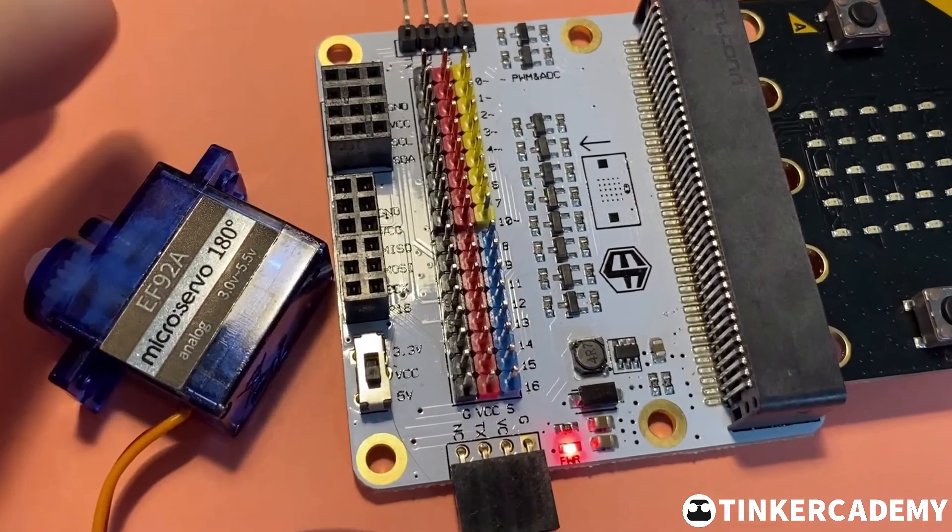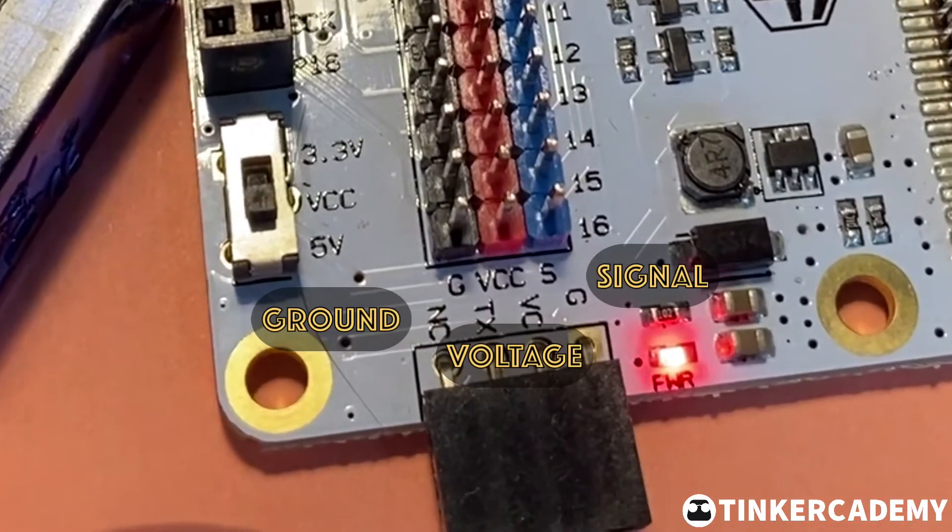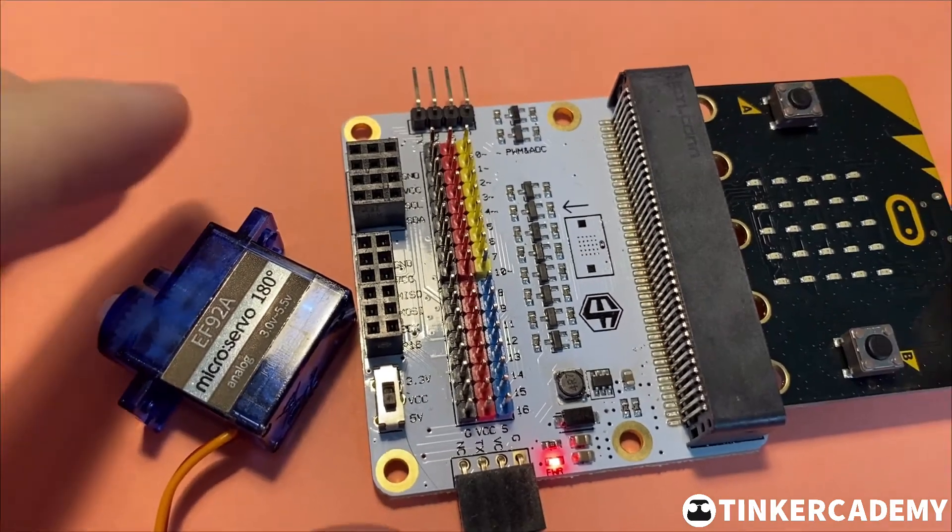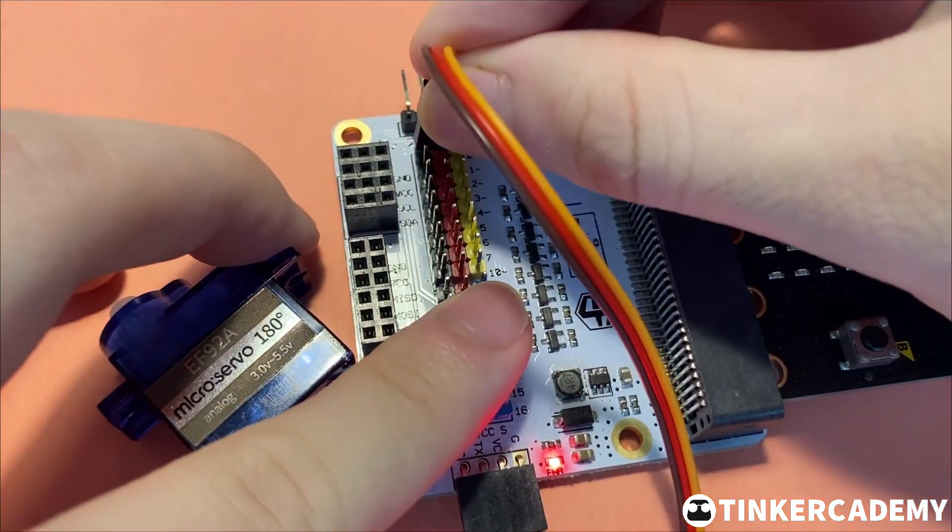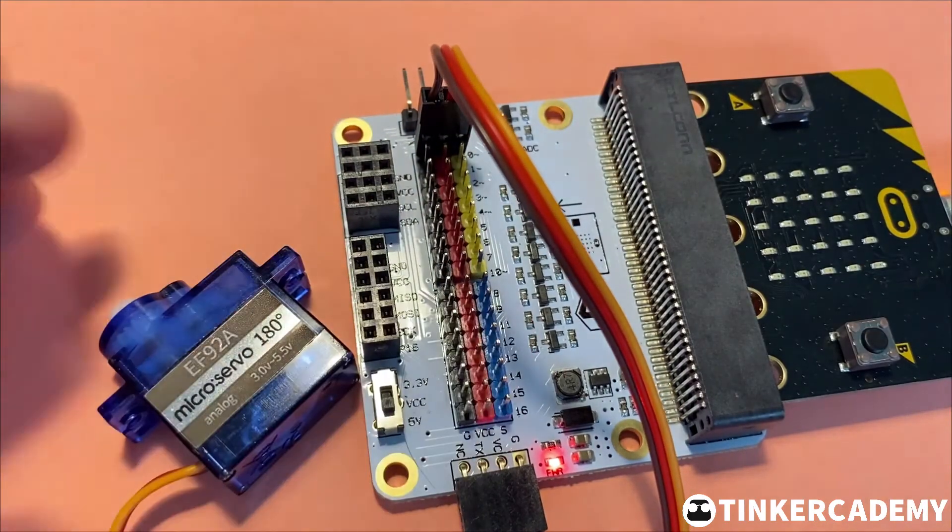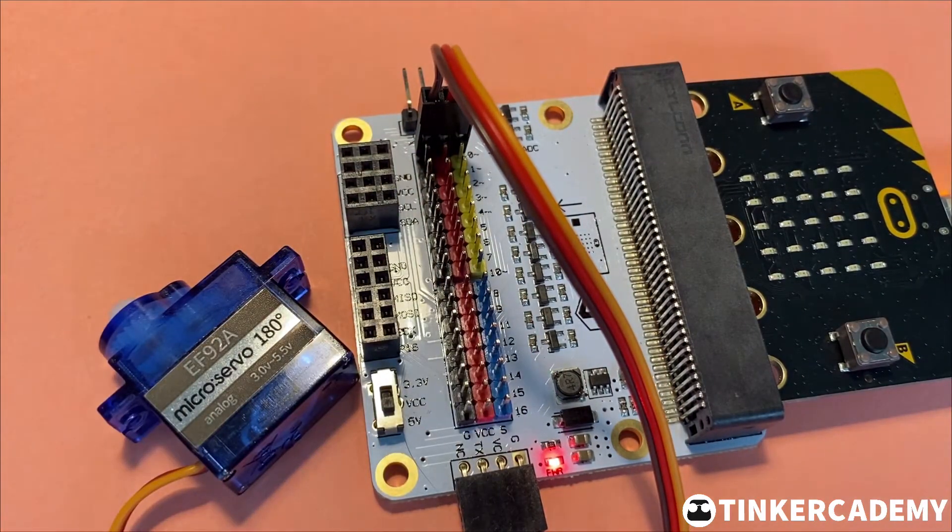The input leads are ground, voltage, and signal, with a pin out matching the breakout board exactly. To connect the servo motor to pin zero, match the colors of the wires with the colors on the pin zero port. Note that colors may not match exactly.